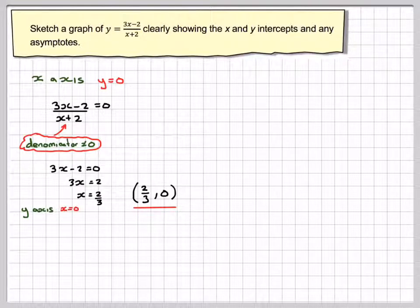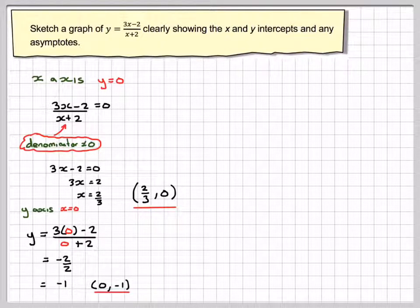For the y-axis, on the y-axis x equals 0, so we'll put x equals 0 in. We have y equals 3 times 0 minus 2 over 0 plus 2. That comes down to minus 2 divided by 2, which equals minus 1. So it goes through the point (0, -1).